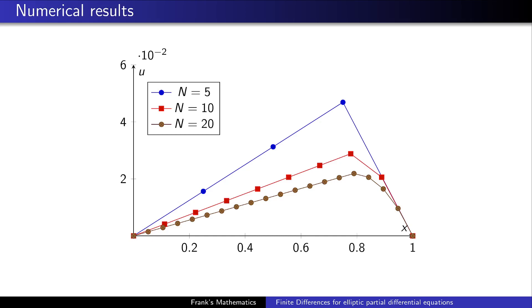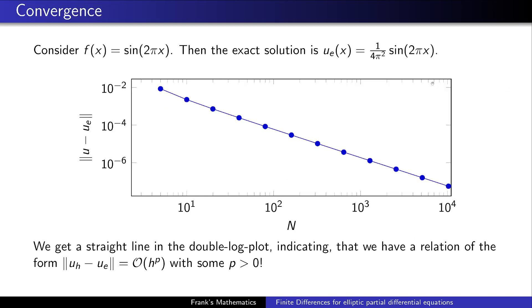For this example we do not have an exact solution at hand. Although we could compute this, for one-dimensional problems you could actually compute exact solutions at least if you can integrate. But it's easier to take a look at an example where we know the solution a priori. You can check that if we choose f to be the sine function, the exact solution looks like this and we denote this exact solution by u_e.